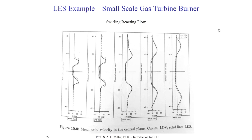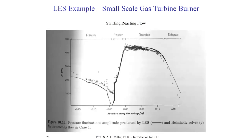All we can validate with is LDV measurements of the velocity field. Looking at the reacting flow examples, from left to right we have axial positions of cross-stream velocity plots, with x-axis as velocity and y-axis as traces across the flow using LDV. We've generally captured the trends with LES of our reacting swirling flow in the combustion chamber. Along the centerline axis we can look at the fluctuating pressure amplitude extracted from the LES and a particular Helmholtz solver through the plenum, swirler, and combustion chamber exit. There's rather good agreement between the two solvers, though the Helmholtz approach is much simplified.